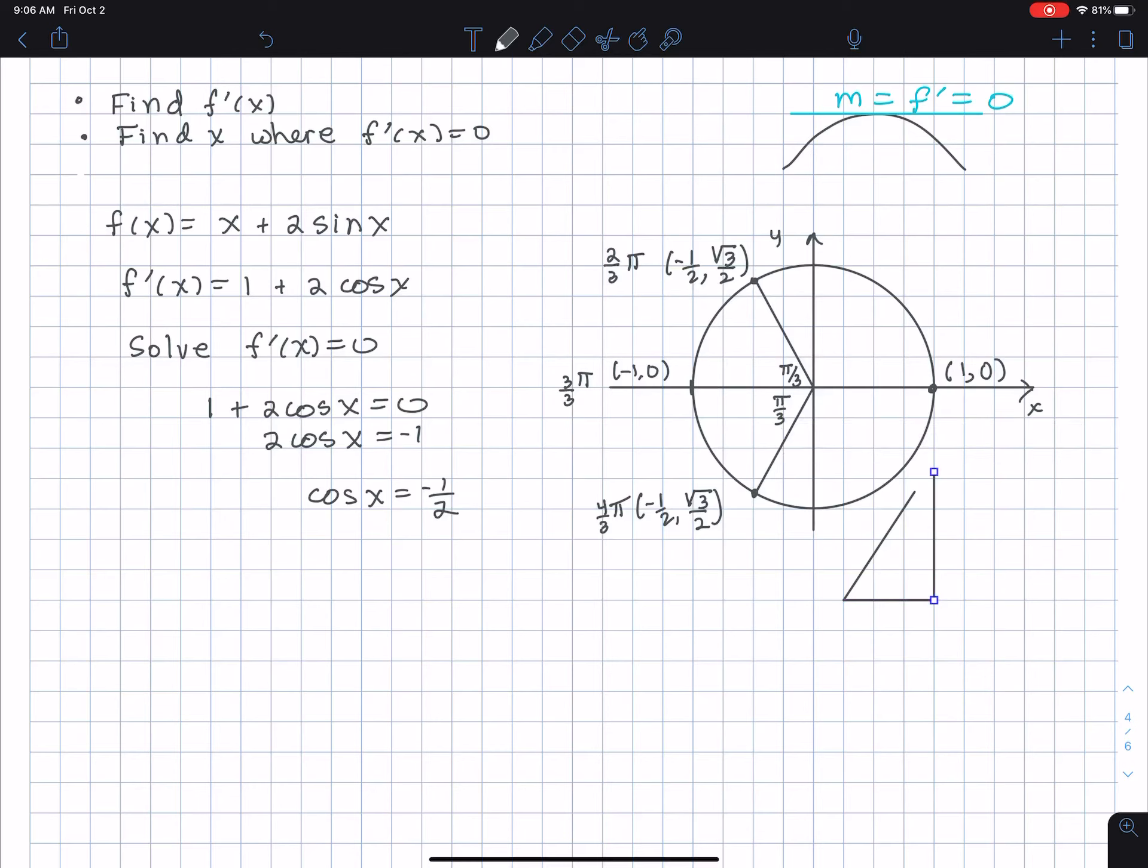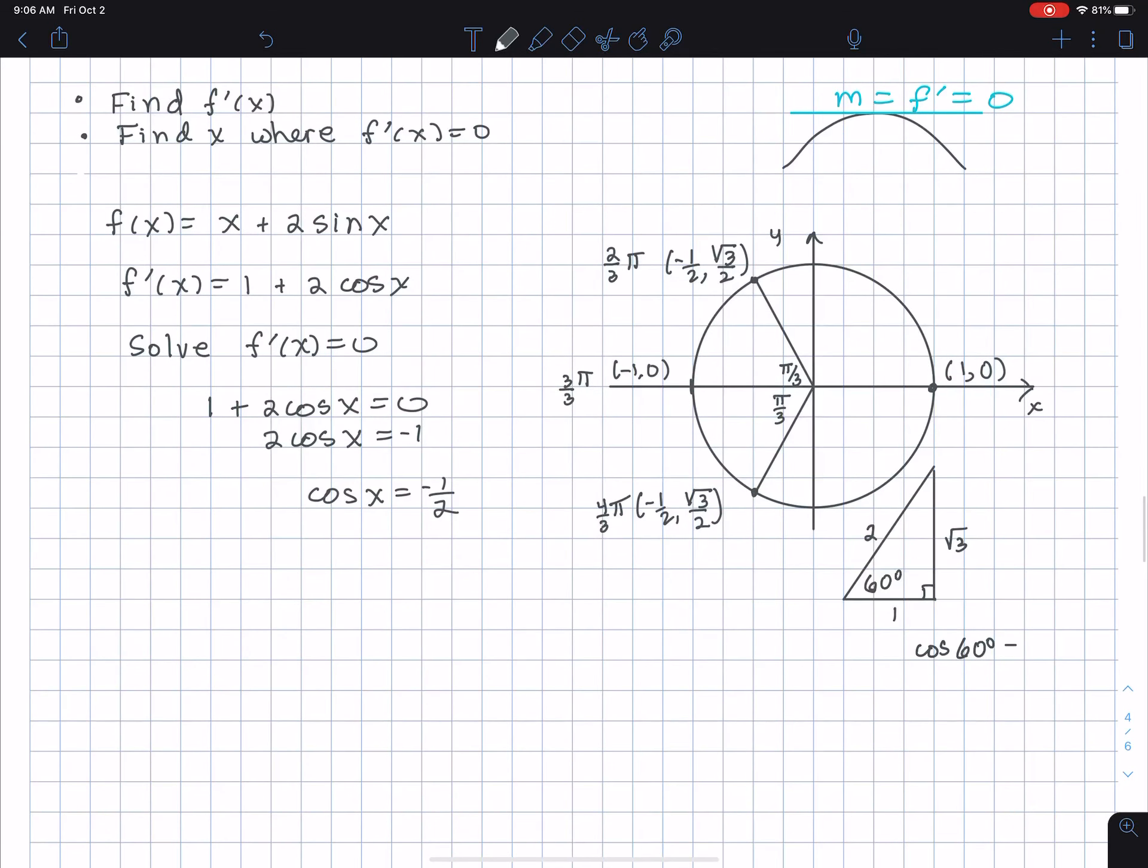Roughly speaking, we have 60 degrees if I have 1/2 as adjacent over hypotenuse. So cos(60°) = 1/2.